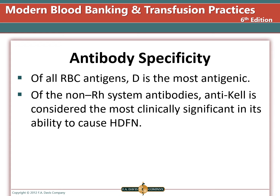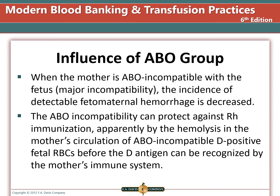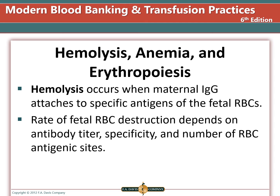Of all red blood cell antigens, D is the most antigenic. Of non-Rh system antibodies, anti-Kell (anti-K) is considered the most clinically significant in causing HDFN. The ABO group of the mother and child can affect HDFN development — a major ABO incompatibility is actually protective, as the mother removes ABO-incompatible cells via ABO antigens without noticing the D antigen. Hemolysis occurs when maternal IgG attaches to specific antigens on fetal red blood cells, and the rate of destruction depends on antibody titer, specificity, and number of antigenic sites.